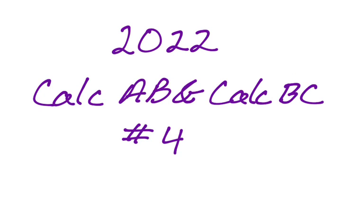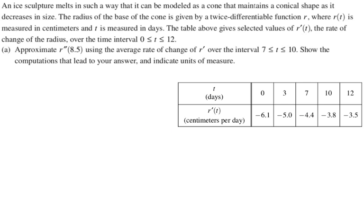Okay, in this video we're going to do number four from the Calc AB and Calc BC 2022 AP Calculus exams, and it's a table problem where you do typical table problem things. An ice sculpture melts in such a way that it can be modeled as a cone that maintains a conical shape as it decreases in size. The radius of the base of the cone is given by a twice-differentiable function r where r of t is measured in centimeters and t is measured in days. The table gives selected values of r prime of t, the rate of change of the radius, over the time interval from 0 to 12.